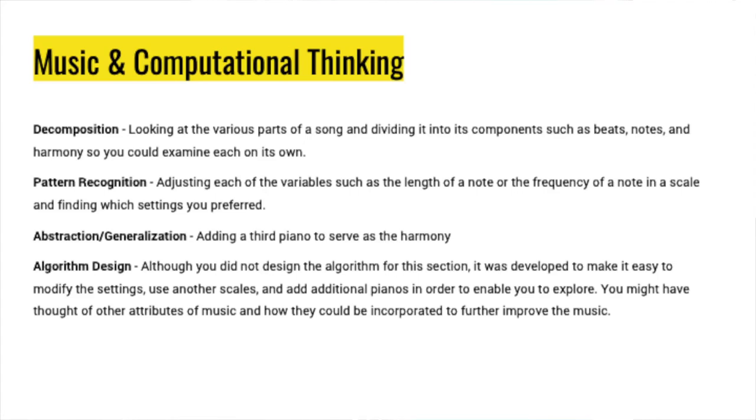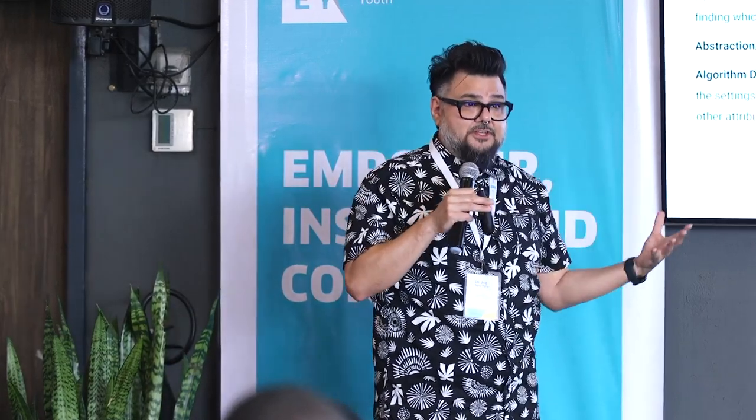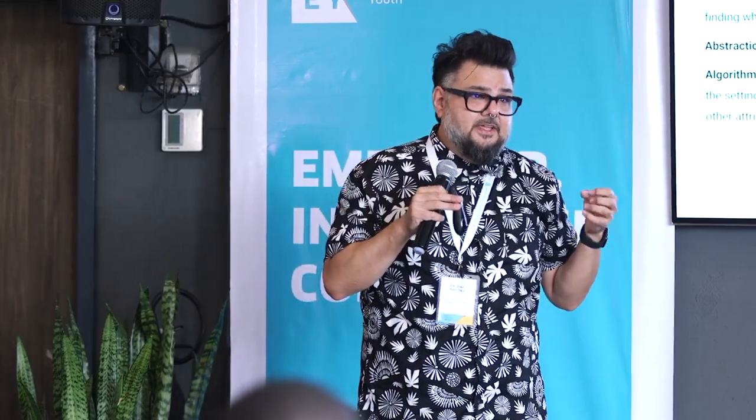For pattern recognition, we can adjust each variable — the length of a note or the frequency of a note on a scale — to get to the settings you prefer. All music is based on scales, going C, D, E, F, G, A, B, C. When musicians want to play together, the first question is 'what key is this in?' If they figure out the key, they know which notes they can play — that's a form of computational thinking, breaking it down into smaller pieces.